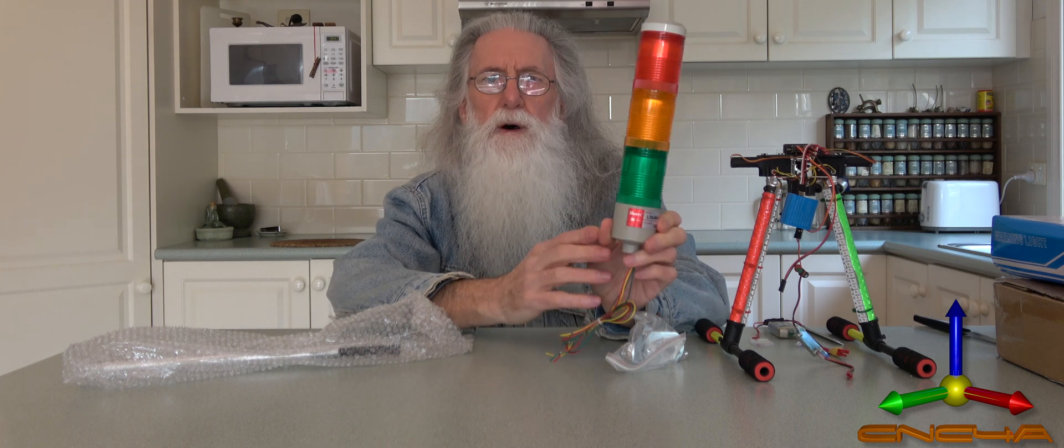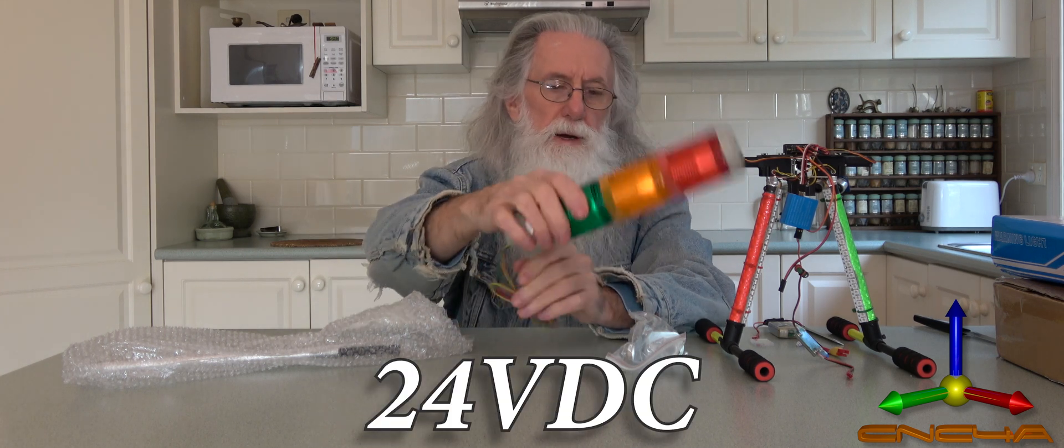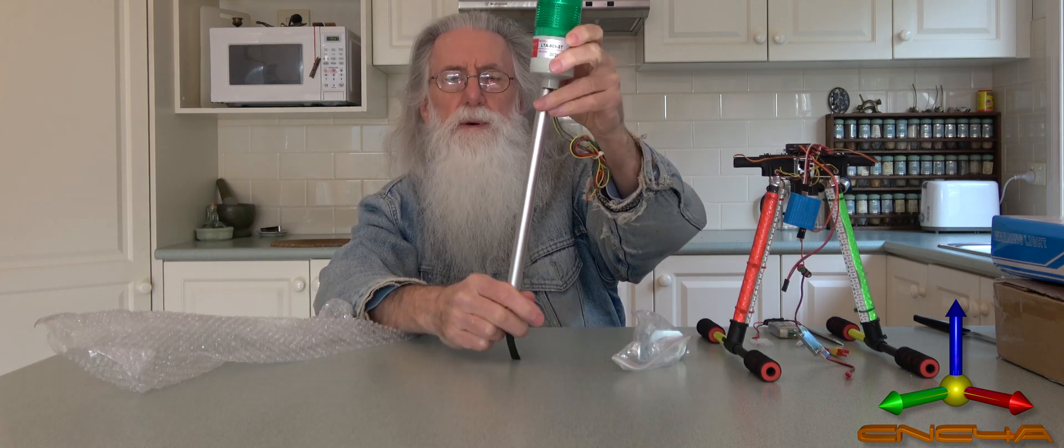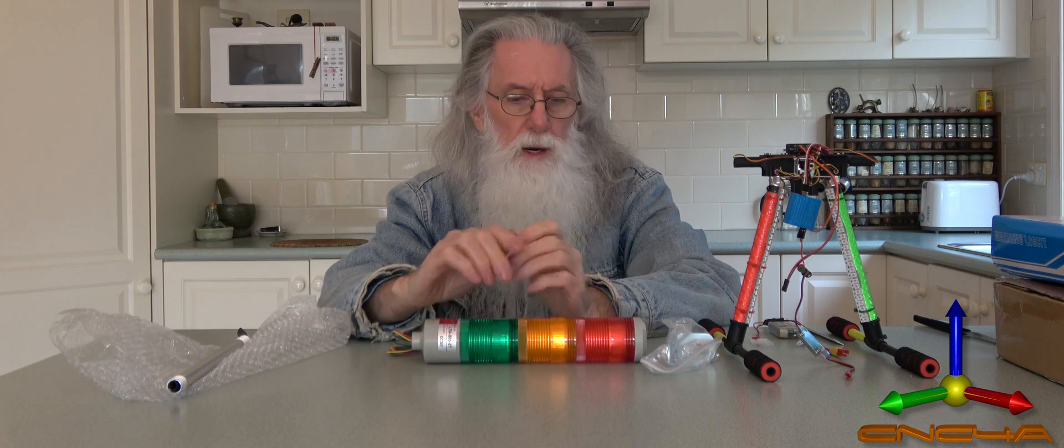They come in different voltages, which is compatible with my controller. Bit of heat shrink tube puts up on there, screws it in. Aluminium. Why did I get it?